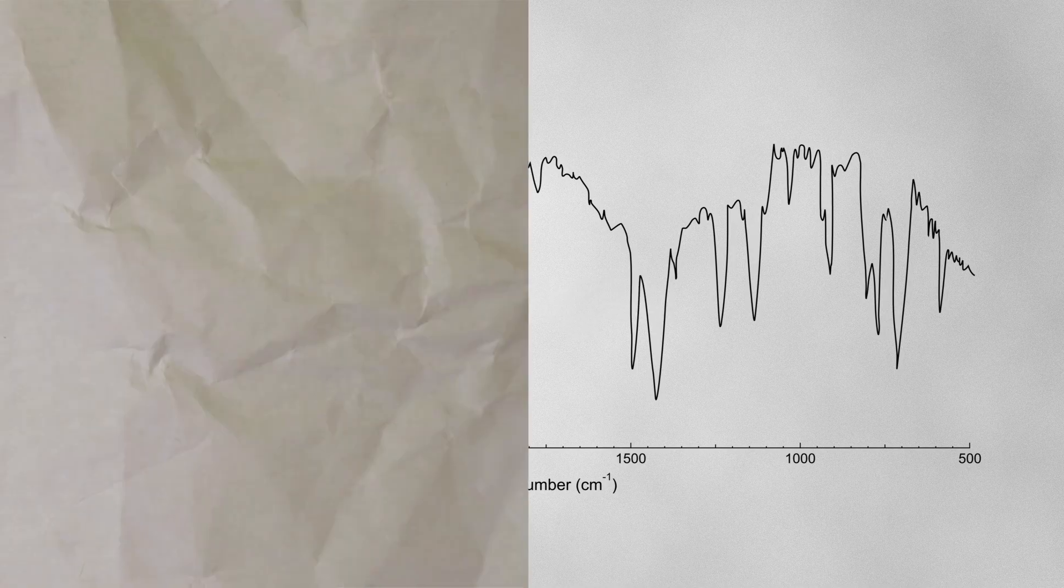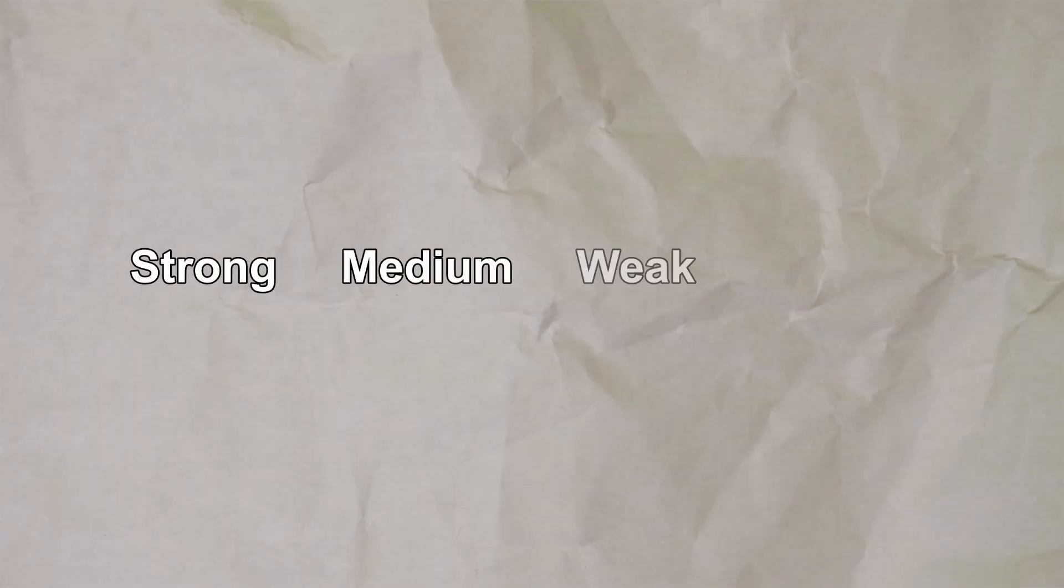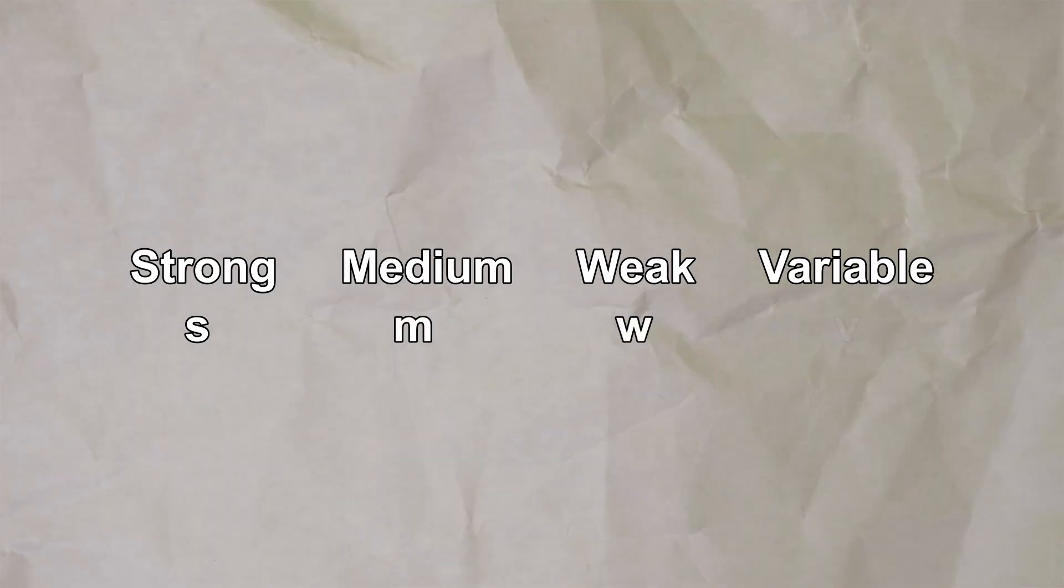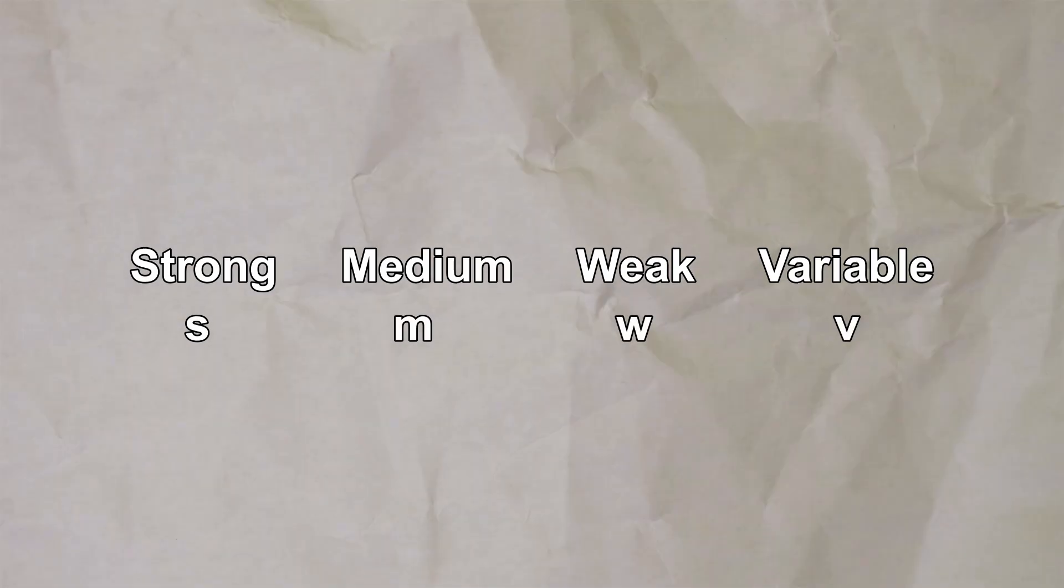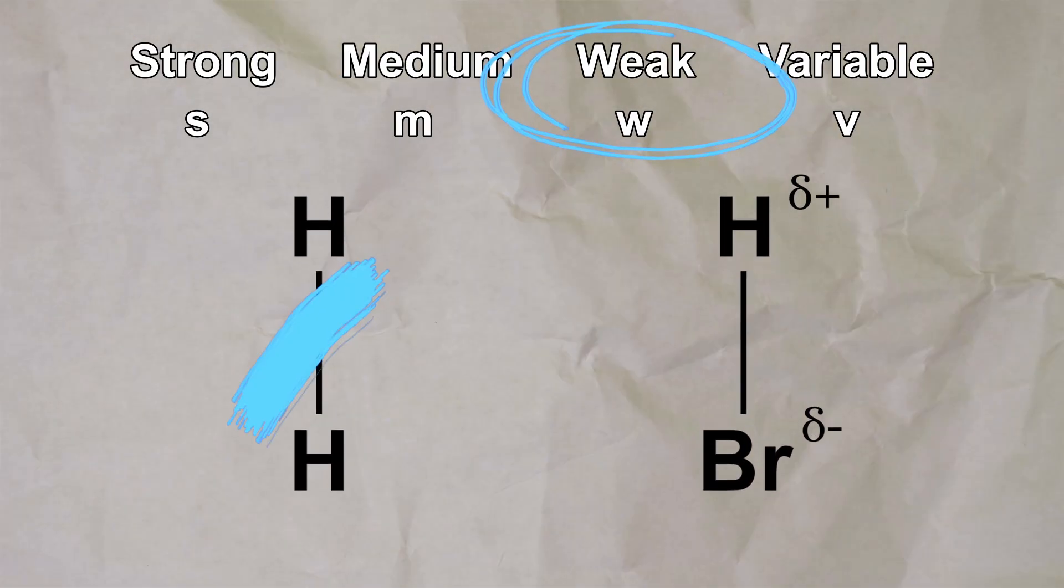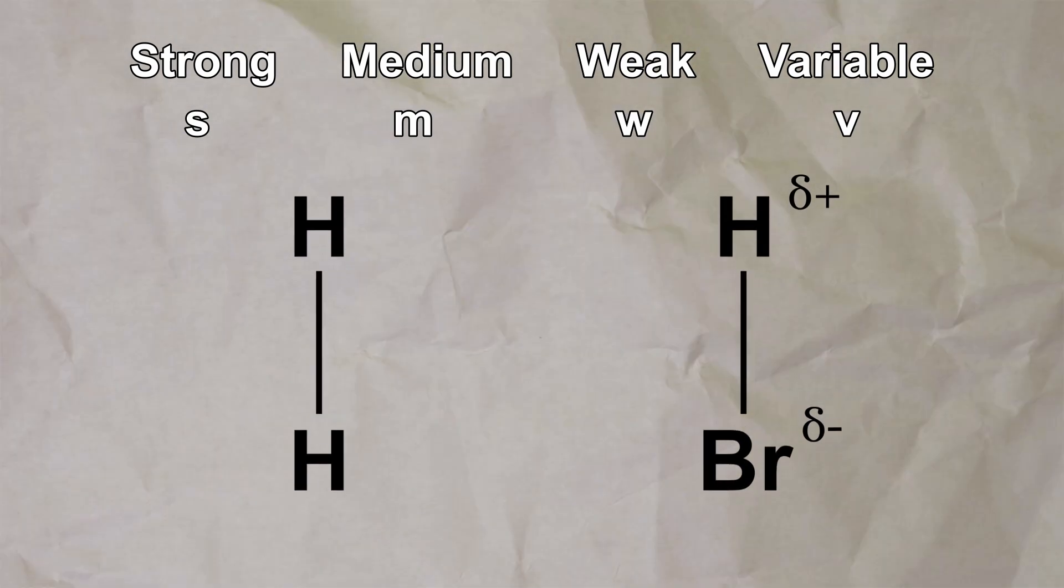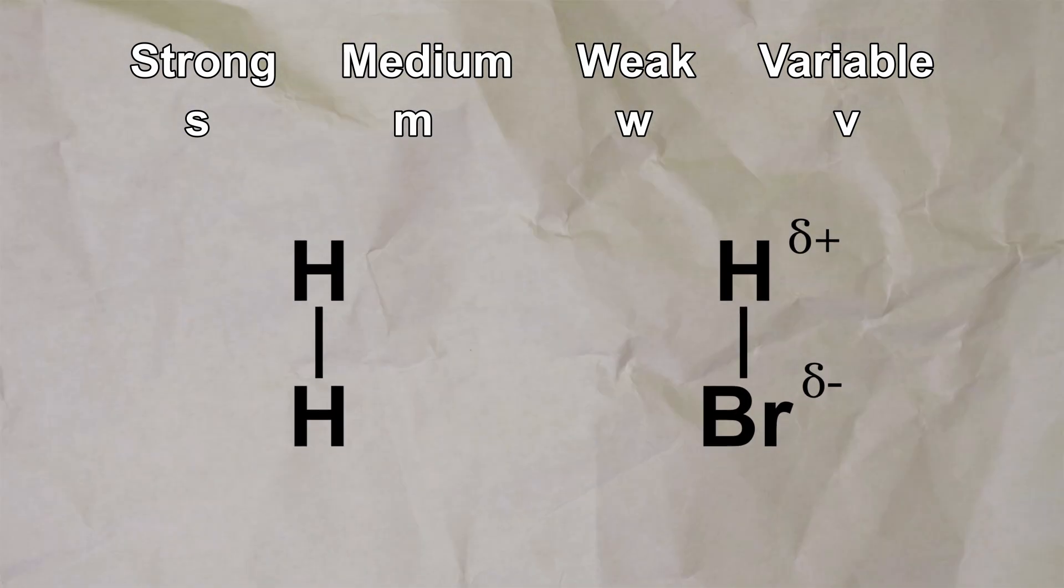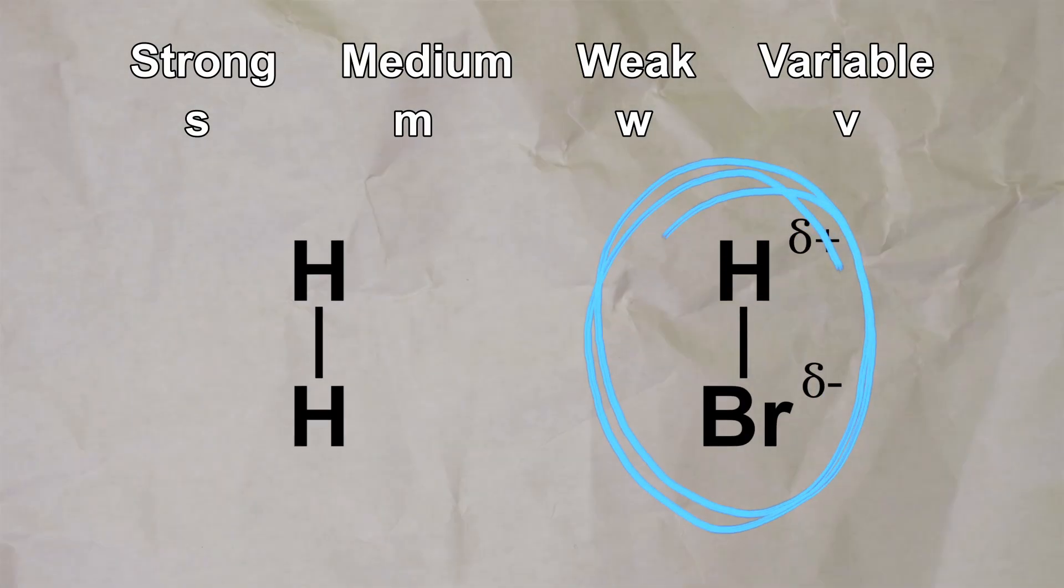In the literature, absorption bands can be described as strong, medium, weak, or variable, and are usually given the letters S, M, W, or V to indicate this. The factor that affects the strength of the absorption is the extent to which the dipole changes. A larger change in dipole leads to a stronger absorption. A smaller change in dipole leads to a weaker absorption. No change in dipole leads to no absorption at all, as we discussed earlier in the video. So, more polar bonds tend to result in stronger absorptions than less polar bonds.